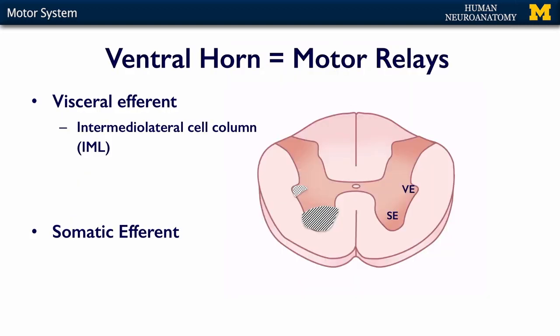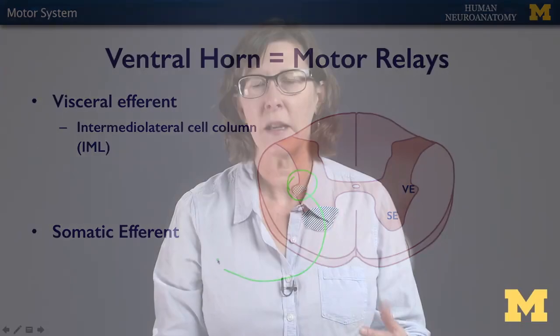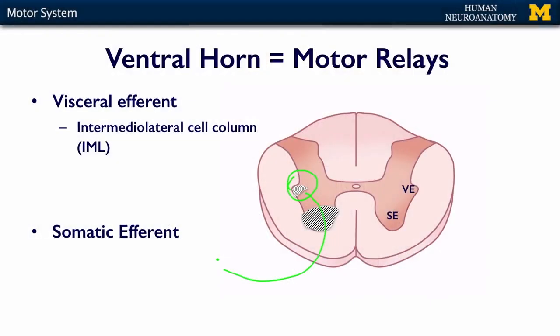There are two types of motor information and motor behaviors. There are the visceral efferents — the visceral efferent motor neurons are contained in the intermediolateral cell column. They're going to exit with your ventral roots and innervate hollow organs, like your gut, your heart, your lungs. The somatic efferent is what we're going to spend most of our time talking about, and those neurons are housed in the ventral horn. Their axons exit with the ventral rootlets and join the spinal nerves to distribute in the periphery to all of your muscles.